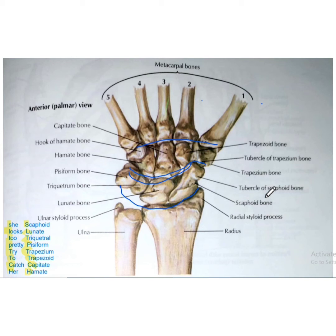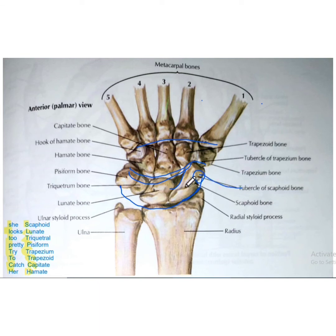Now let us discuss the specific features of each of these eight carpal bones. The scaphoid bone is concave on one side and convex on the other. It has a tubercle located on its lateral side, called the tubercle of the scaphoid bone. The scaphoid resembles the shape of a boat.